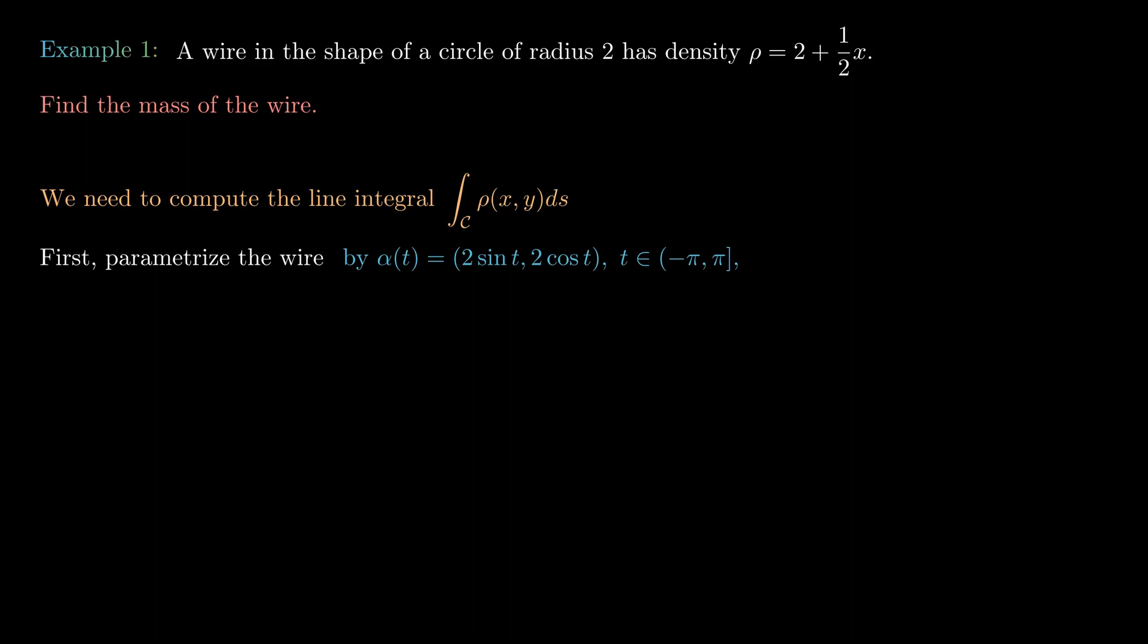With respect to this parameterization, ρ = 2 + sin t. The line integral over curve C of ρ(x,y)ds equals the integral from -π to π of (2 + sin t)√(4cos²t + 4sin²t)dt.